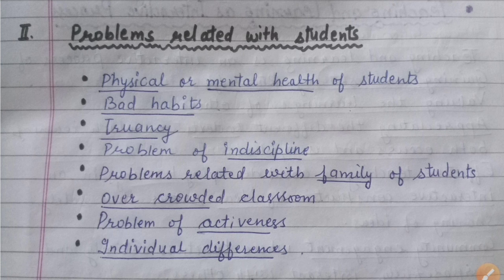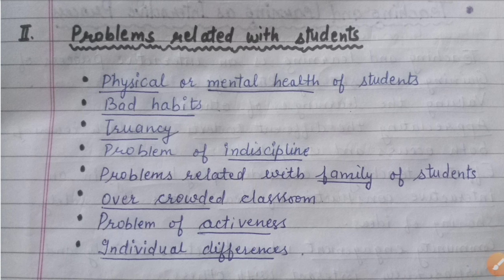The second point is bad habits. Some children have bad habits — they disturb everyone in class, they don't listen to teachers, and they are not able to study. If such a child is present, classroom learning is disrupted. The next point is truancy — when children are absent from class without any permission, they miss learning.